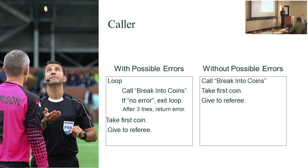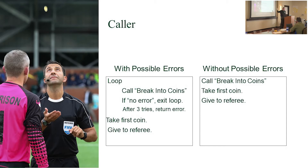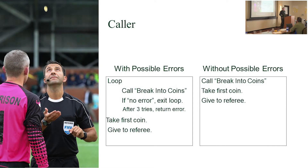Whether or not a function returns an error has a radical impact on caller code. If it can return errors, I write a loop: call 'break into coins,' check for no error, use it, otherwise keep calling. But if the subroutine guarantees you'll always get a coin somehow, I can just write: call 'break into coin,' take first coin, give to referee. The simpler version requires no retry logic at all.